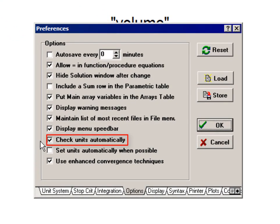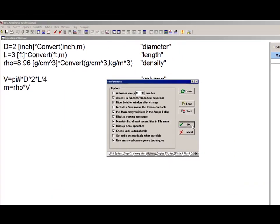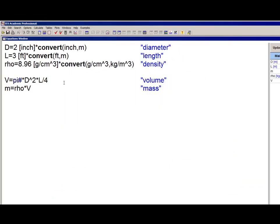If you return to our problem from our previous two videos, which is calculating the mass of this copper rod, here what I've done is I've entered the inputs, I've converted them to SI units, I've put in the equations to calculate volume and mass, but I have not set the units of any of the variables myself.